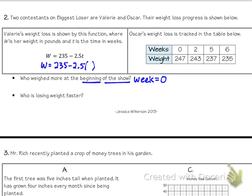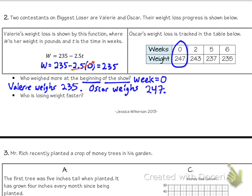I'm going to plug it into our function here. So W equals 235 minus 2.5 times our input. If we're plugging in zero, I'm going to put a zero right there. Well, zero times 2.5 is zero, and so we're just left with 235. That means that Valerie started off at weighing 235. On the table, it's a little easier to see Oscar's weight at weeks zero. That is 247. So Oscar weighed more at the beginning of the show.